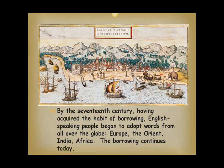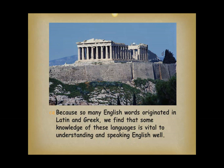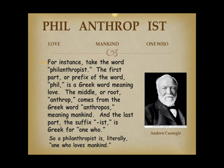Because so many English words originated in Latin and Greek, some knowledge of these languages is vital to understanding and speaking English well. For instance, take the word philanthropist. The first part or prefix, phil, is a Greek word meaning love. The middle or root, anthrop, comes from the Greek word anthropos, meaning mankind. And the last part, the suffix -ist, is Greek for one who. So a philanthropist is literally one who loves mankind.